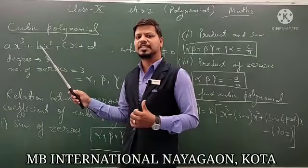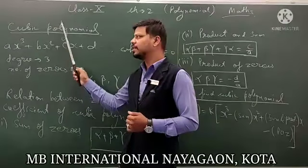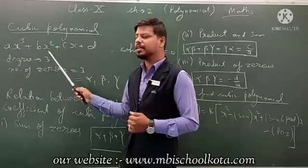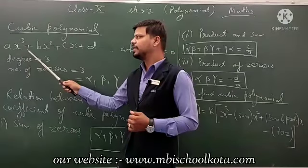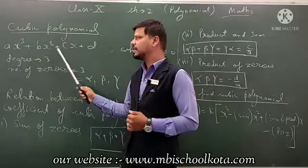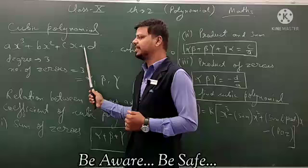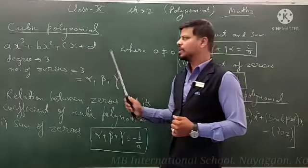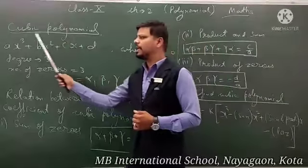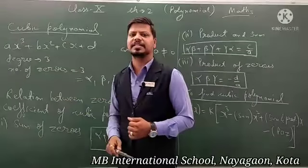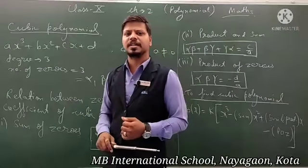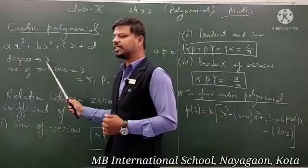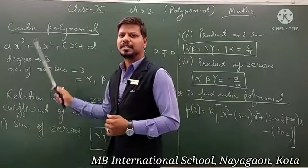Degree agar kisi bhi polynomial ki 3 hai, then it is a cubic polynomial. This is the general form of a cubic polynomial, that is ax³ + bx² + cx + d, where a is not equal to 0. Degree 3 hoti hai is ko bolte hain cubic polynomial.